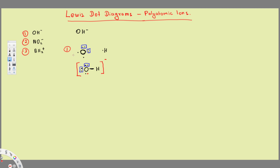Now let's do NO₂ minus. Let's put all the atoms first. Nitrogen has five valence electrons: one, two, three, four, five. We have two oxygens, and each oxygen has six valence electrons: one, two, three, four, five, six.